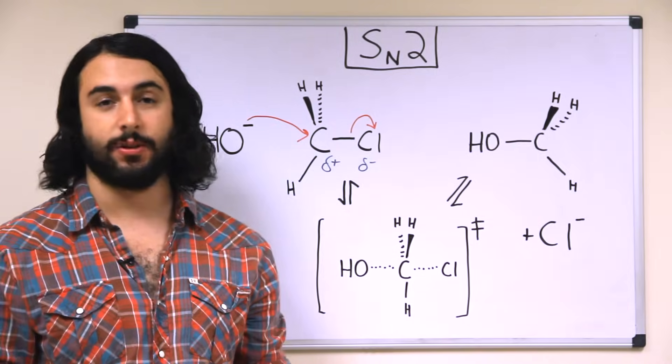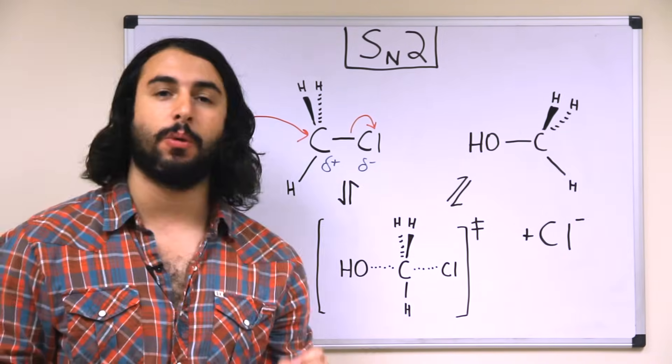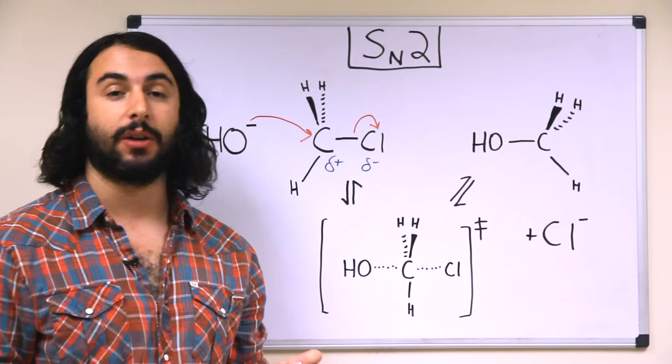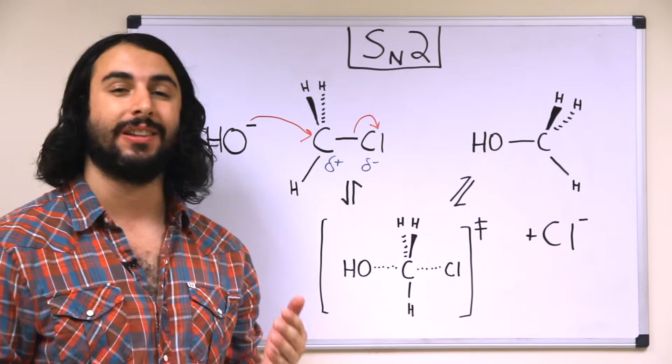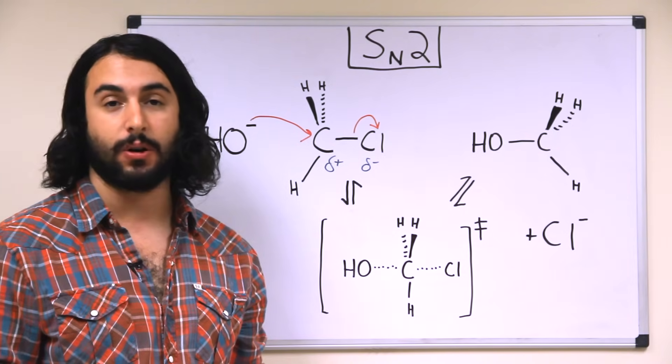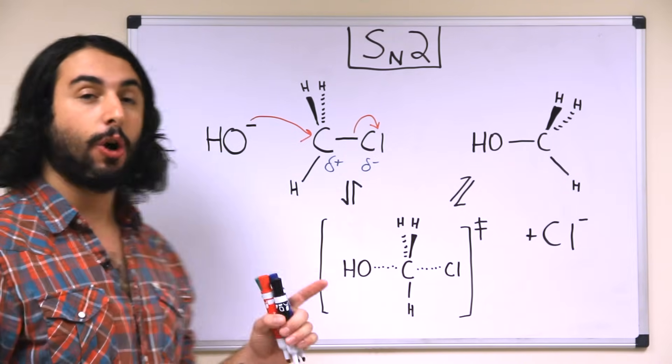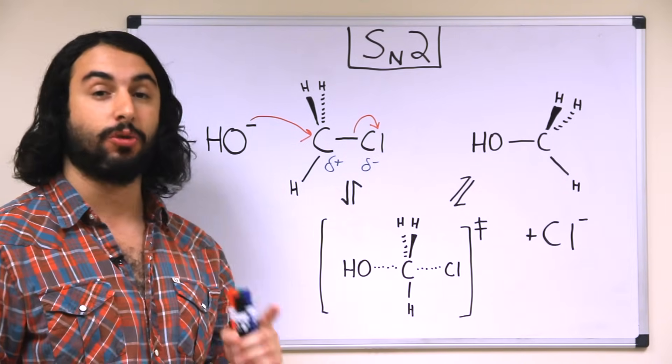Now that we know what's going on in an SN2 reaction, let's take a closer look at the mechanism. So for one thing, whenever we're drawing mechanisms for organic reactions, we have to be very careful with our electron pushing arrows. These are arrows that depict the direction of electron flow, and they have to be drawn in a very specific way. We're always going to go from electron rich to electron poor.